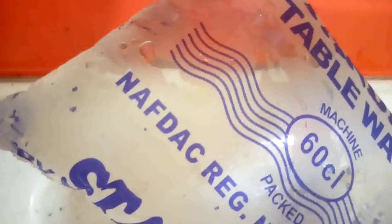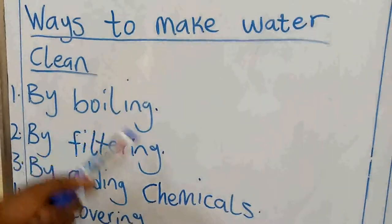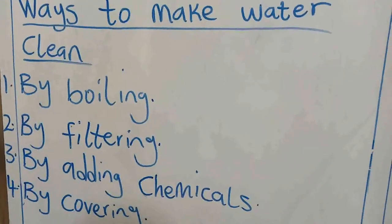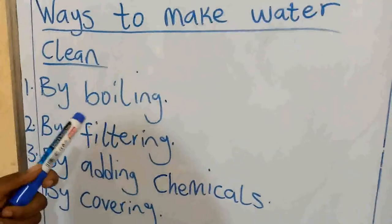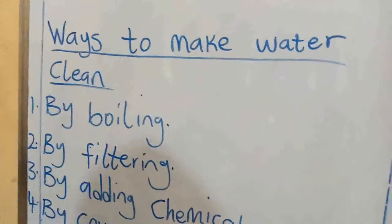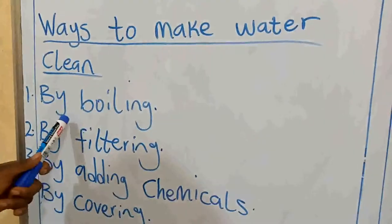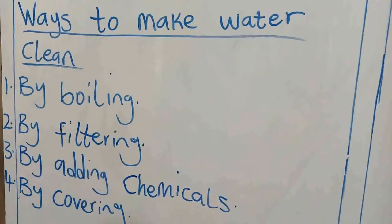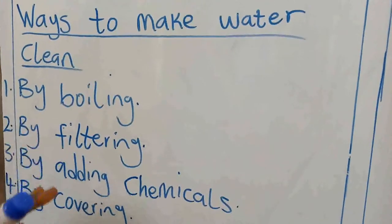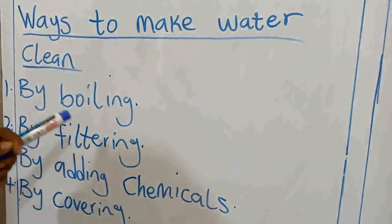We are going to look at ways we can make water clean. Number one is by boiling. We can put water in a pot or kettle, place it on our stove, and boil it — the same way you boil water for tea. After boiling, you can also filter it. If the water has some dirt, you filter it. So one way to make water clean is by boiling, and the second way is by filtering.